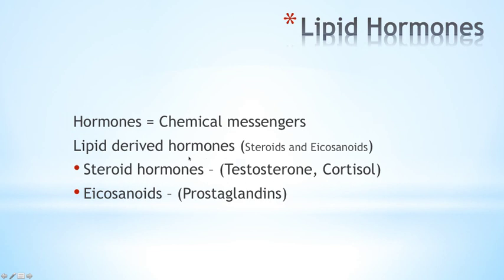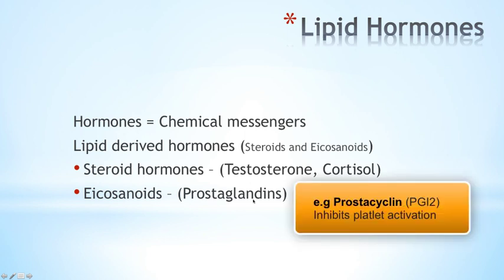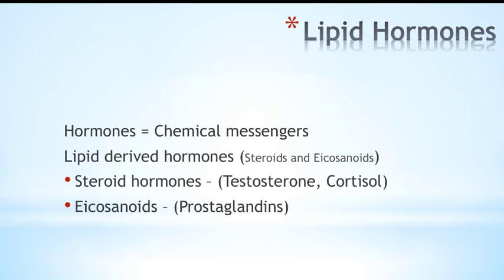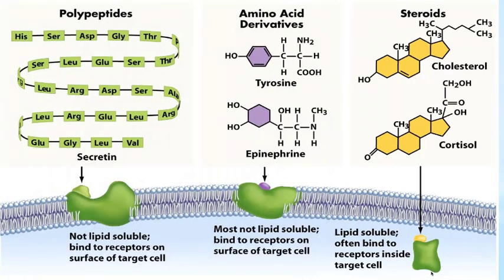The last group is lipid-derived hormones. These can be steroid hormones such as testosterone, the male sex hormone, or cortisol, which is important for glucose regulation and has anti-inflammatory functions. Steroid hormones are made from cholesterol. Then there are eicosanoids such as prostaglandin, which is important for vasodilation, platelet inhibition, and bronchodilation — in contrast to thromboxane, also produced from eicosanoids, which causes vasoconstriction and platelet aggregation. Because steroids such as cortisol are lipid-soluble, they diffuse through the lipid bilayer and have a receptor within the cell.